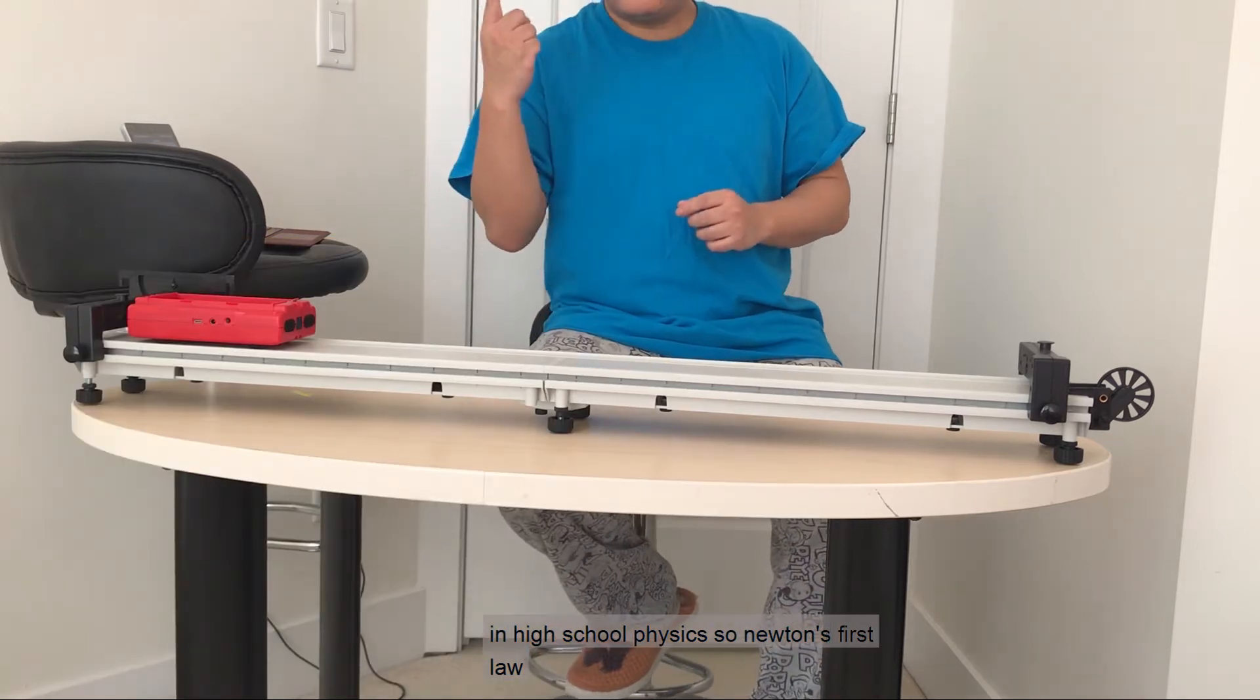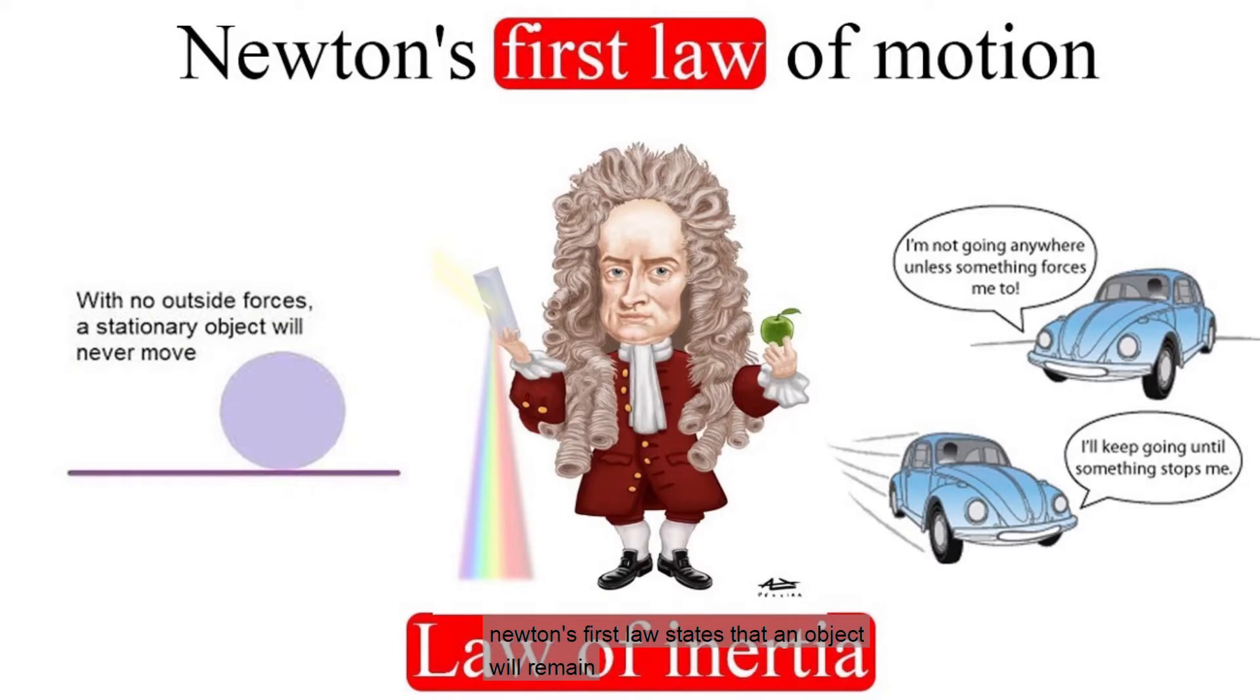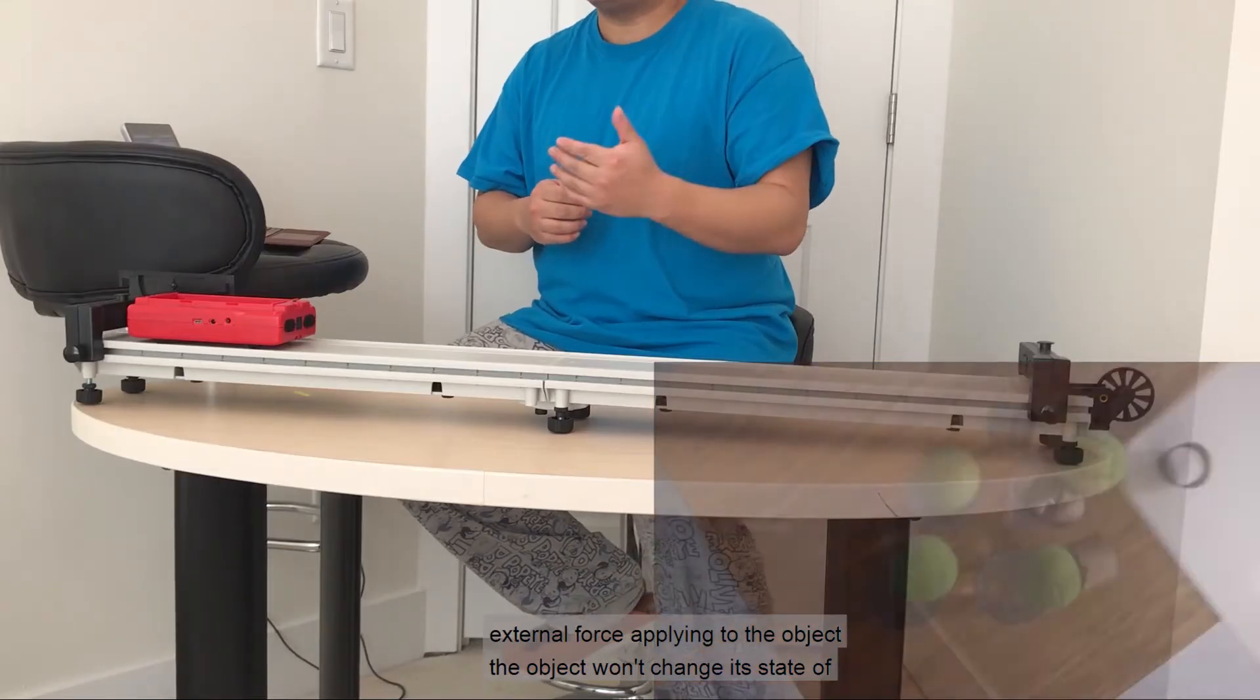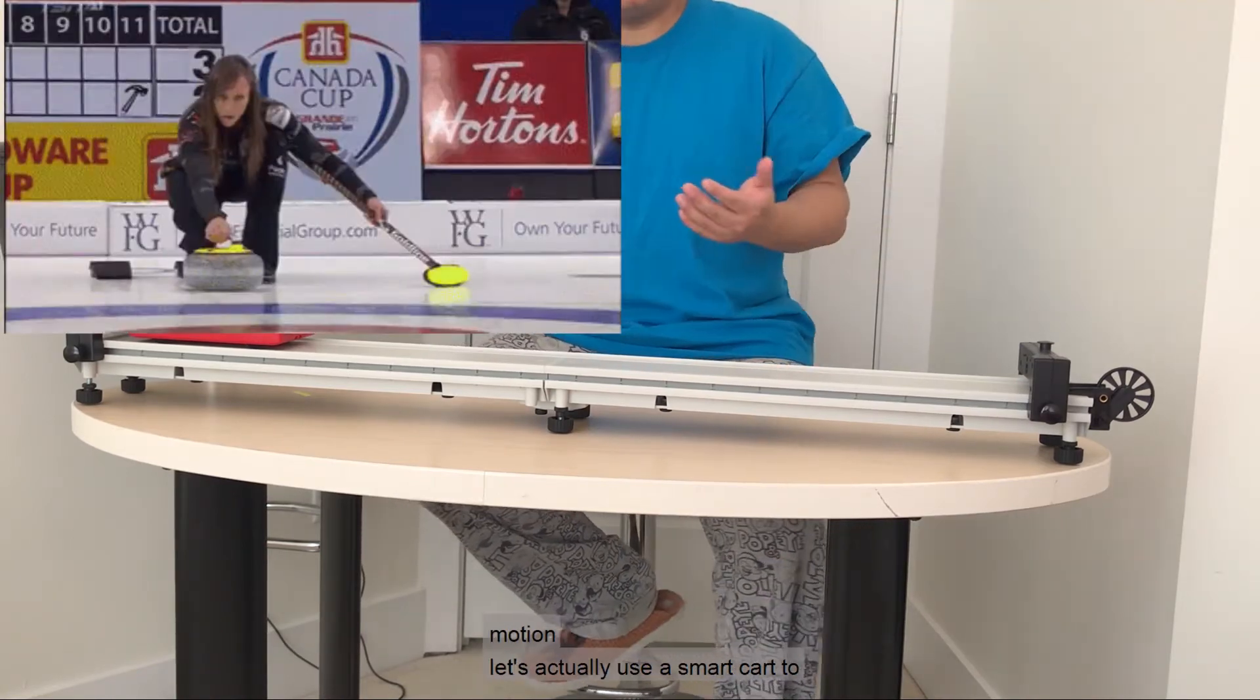So Newton's first law. Newton's first law states that an object will remain at rest or move in a uniform motion unless there is an external force acting on it. This law is also called the law of inertia. Basically, it means if there is no external force applying to the object, the object won't change its state of motion.